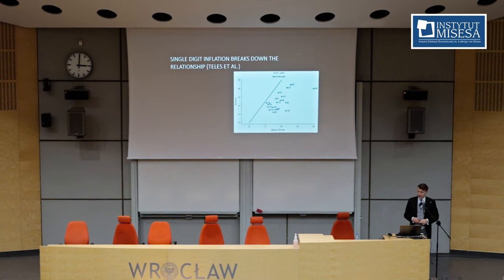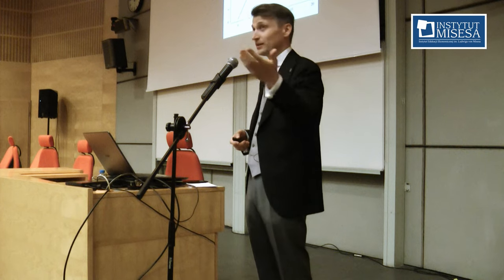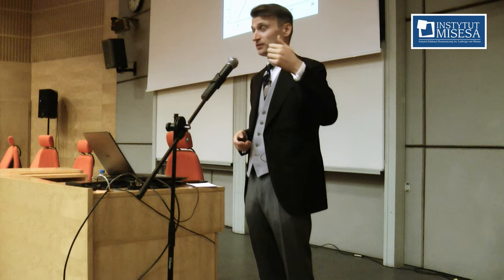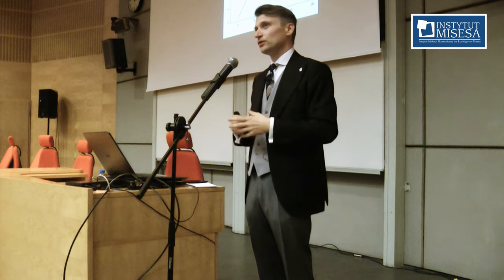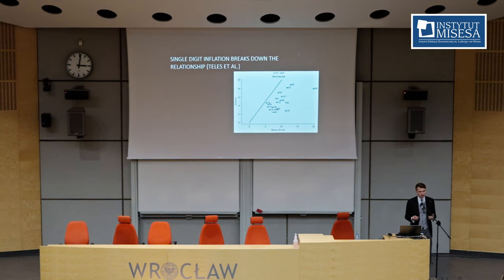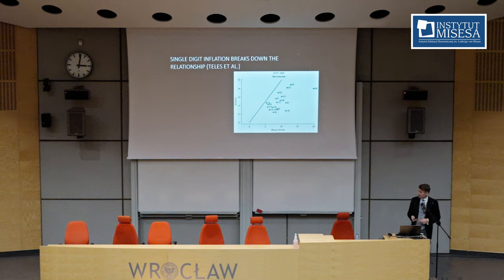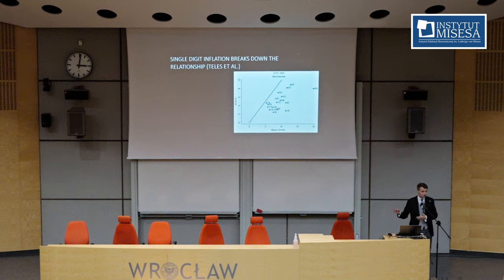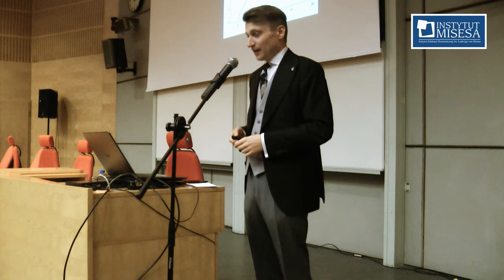Moreover, it was demonstrated that the nice graph showing a relationship between money and prices nicely applies to 110 countries over 30 years — but only when you include countries with high inflation rates. When you do the same correlation analysis for countries with lower inflation — below 12%, below 10%, single-digit inflation — the relationship doesn't look the same. We don't have the 45-degree line. And apparently, that was taken as further proof that quantity theory of money doesn't really work.